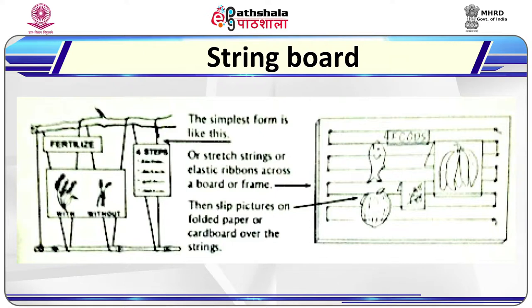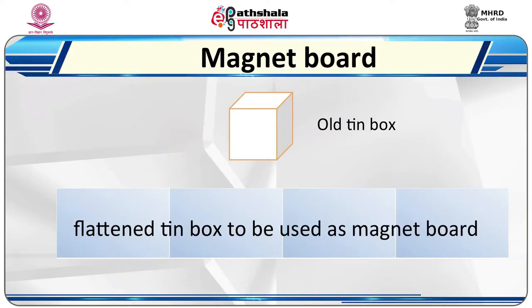String boards are also used as display boards. They are better than flannel boards as they prevent pictures from falling off or blowing away in the wind. Imaginative low-cost string boards can be made using locally available material and expertise. Magnet boards are also used as display boards — prepared with a thin piece of tin-plated steel; an old sign board or flattened tin box may be used. Very small pieces of magnets are glued at the back of pictures to make them stick to the metal board.